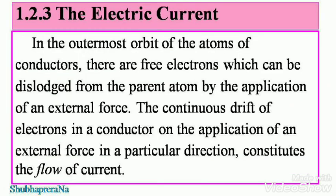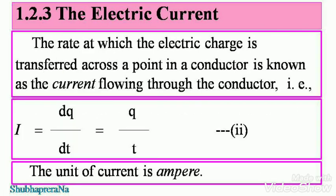Now, electric current. In the outermost orbit of the atoms of conductors, there are free electrons which can be dislodged from the parent atom by the application of an external force. The continuous drift of electrons in a conductor in a particular direction constitutes the flow of current. Current is the rate at which electric charge is transferred across a point in a conductor. i equals dq/dt, or i equals q/t — take this as equation 2. The unit of current is ampere.